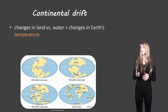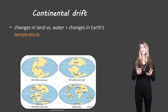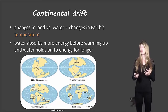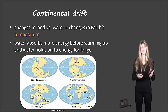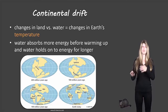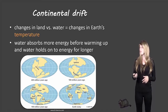The change in land versus water in certain areas of the globe will also cause changes in the Earth's temperature, because water absorbs more heat than land — it warms up more slowly and cools down more quickly. We saw that when we talked about local climate.